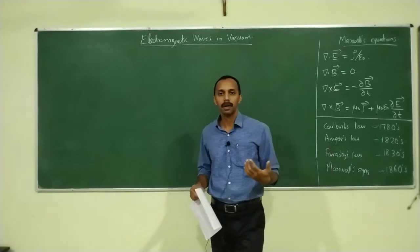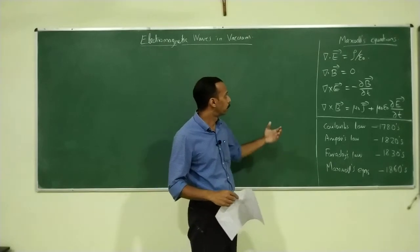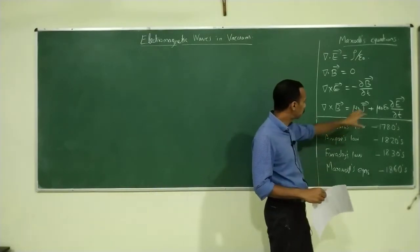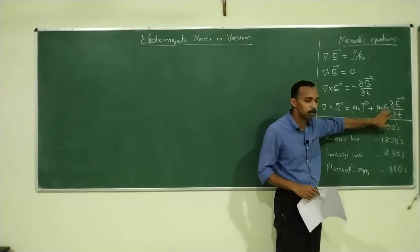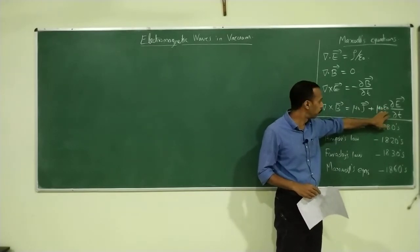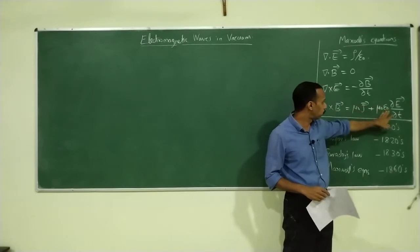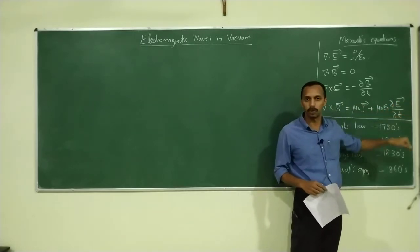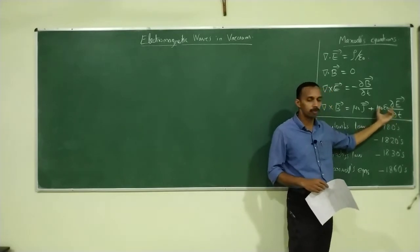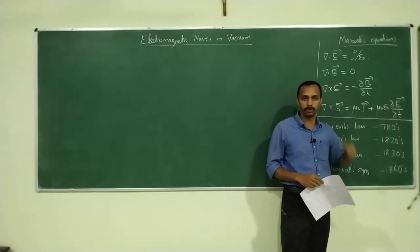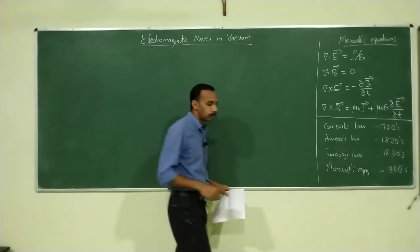Let us see what is the contribution of Maxwell in these equations. Maxwell's contribution is mainly in the last equation — the correction to Ampere's law, this correction term mu zero epsilon zero dou E by dou T. So what is the importance of Maxwell's contribution of this term? That is what we want to see.